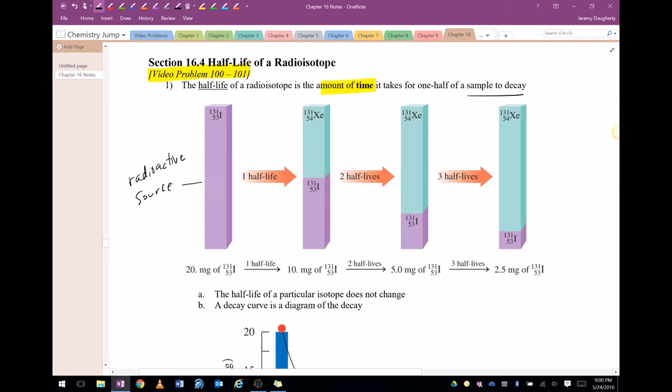After one half-life, the amount of iodine is cut in half, but it doesn't disappear. That half of iodine that we are now missing has been converted to xenon-131.